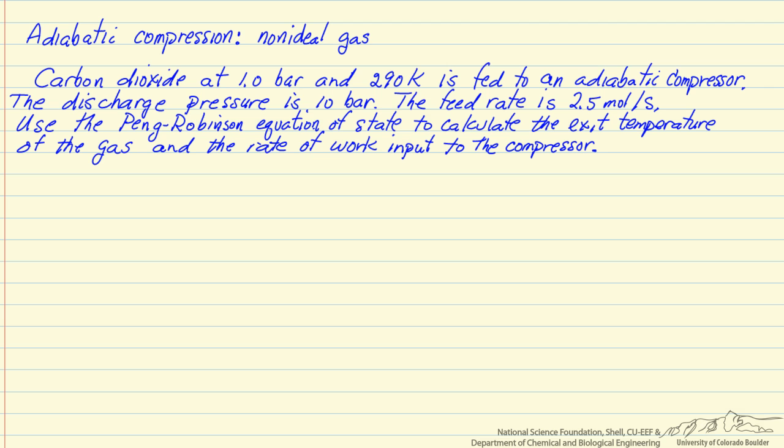In this example, we're going to look at adiabatic compression of a non-ideal gas. So carbon dioxide - we're given feed conditions, we're given the outlet pressure, so we're compressing from 1 bar to 10 bar. The question is what is the outlet temperature and how much work do we have to put in per time if we're compressing 2.5 moles per second of carbon dioxide. And we're going to use the Peng-Robinson equation of state to model this non-ideal gas.